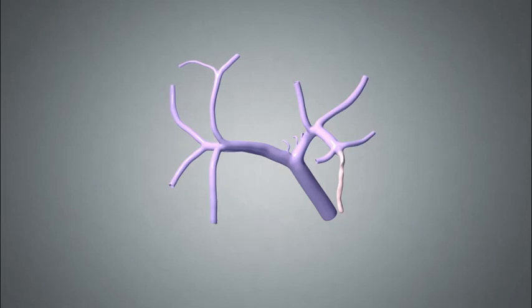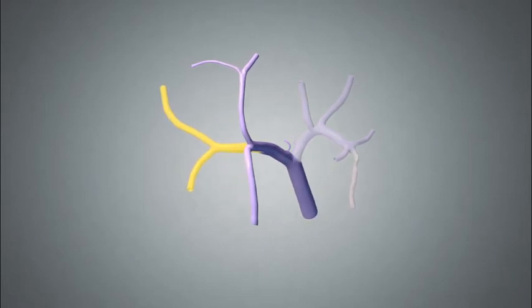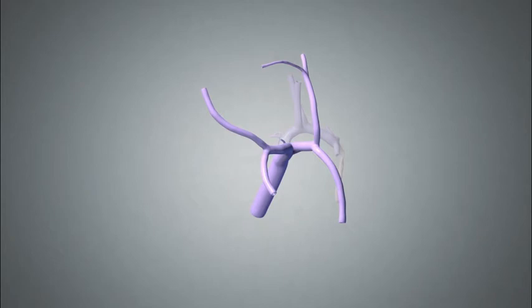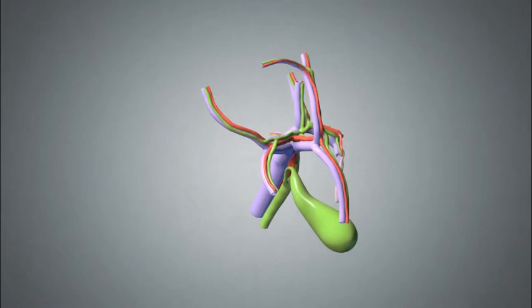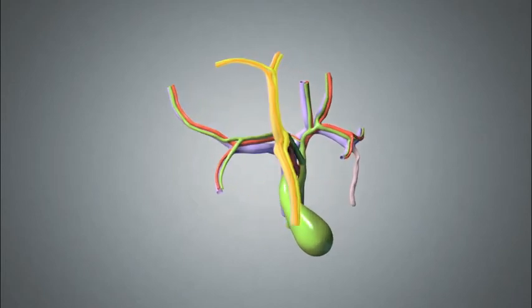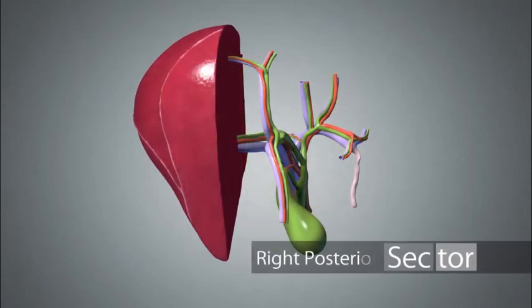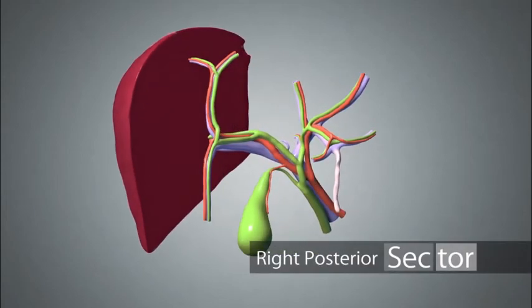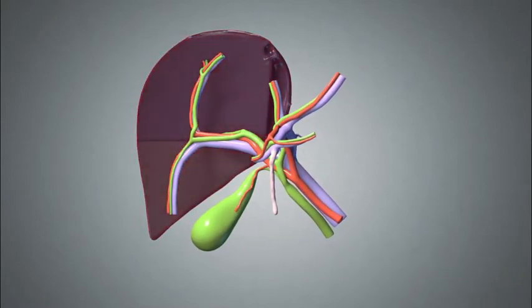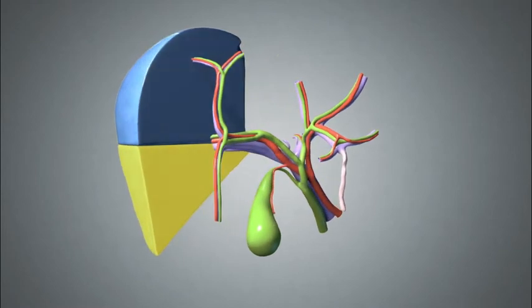The main portal vein branches into a right and left portal vein. The right portal vein branches into a right posterior portal vein and a right anterior portal vein. Along with the portal venous branches, there is also an artery and a bile duct. These three structures are contained within a single sheath and are referred to as the right posterior pedicle and the right anterior pedicle. The right posterior pedicle supplies the right posterior sector, which includes segments 6 and 7.